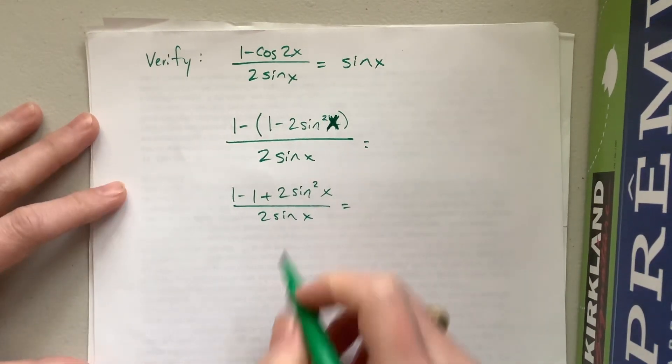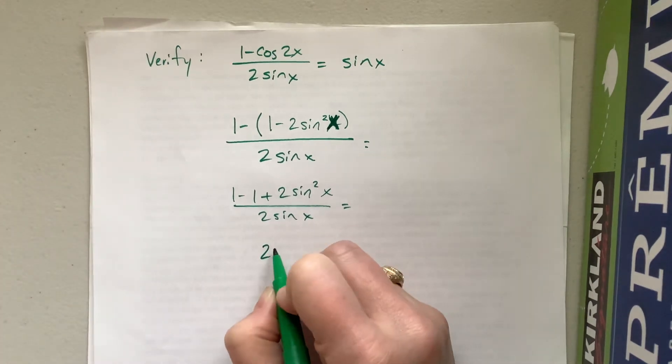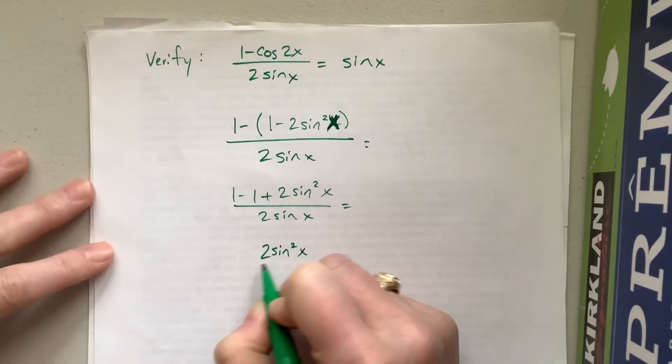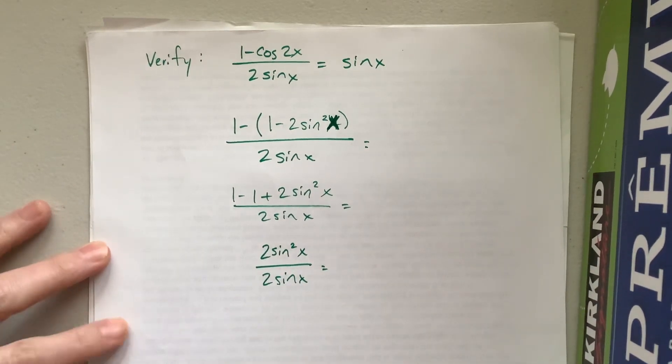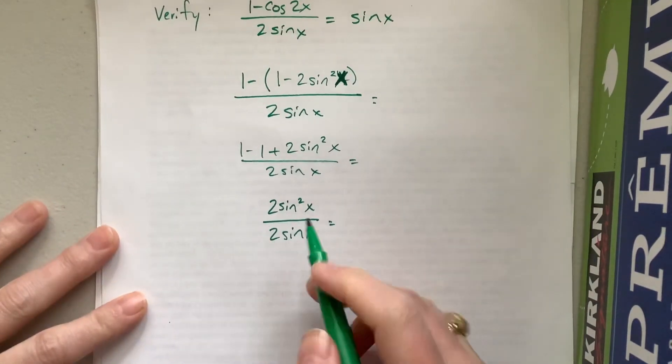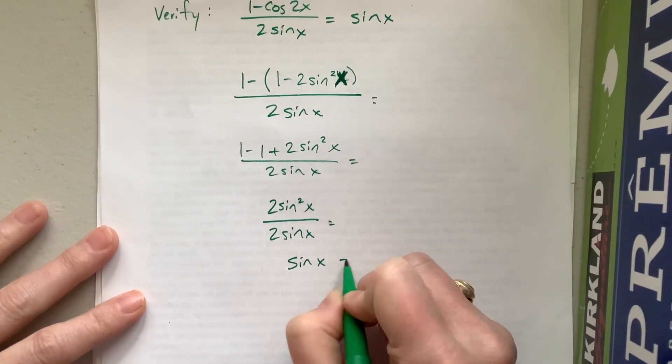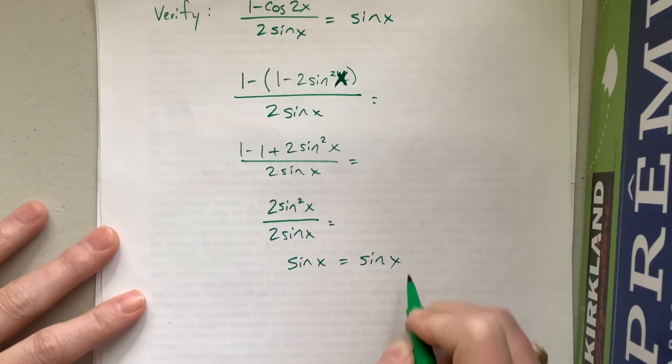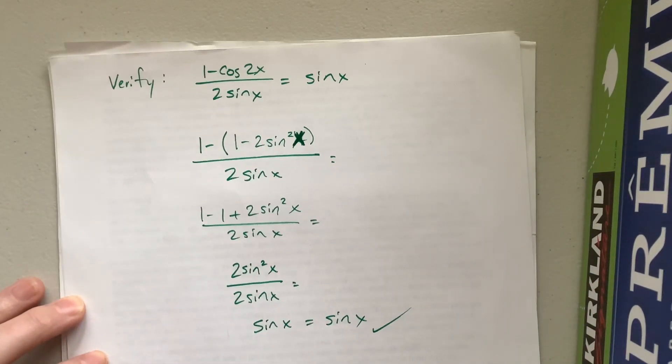Well, 1 minus 1, that's 0, it's gone. 2 sine squared divided by, excuse me, I left the country and got a little bit of a cough. Don't tell, I don't think it's corona. We're good. So notice the twos will cancel, the sine on top and the sine on bottom cancel, and we're left with sine of x is equal to sine of x. And that's one type of thing that they might do, is they might ask us to verify an identity.